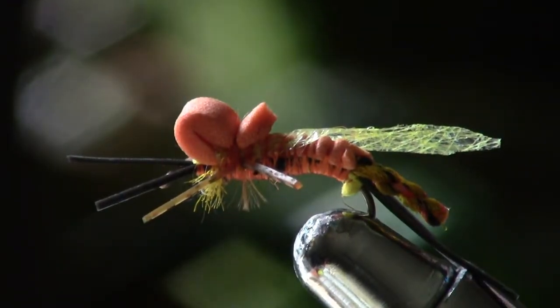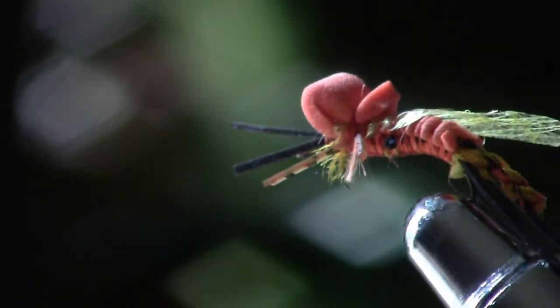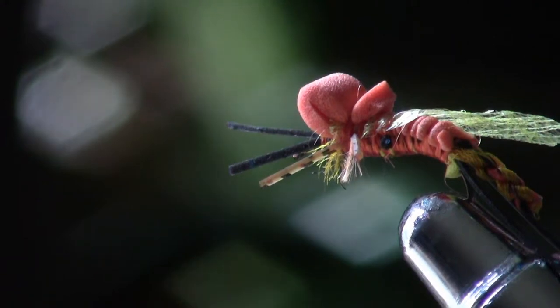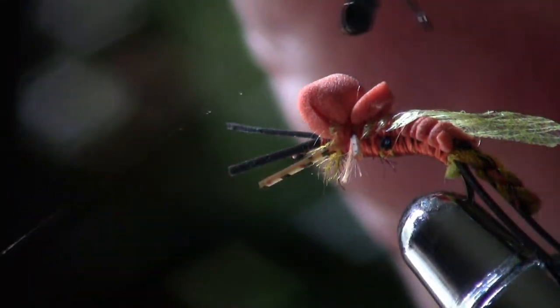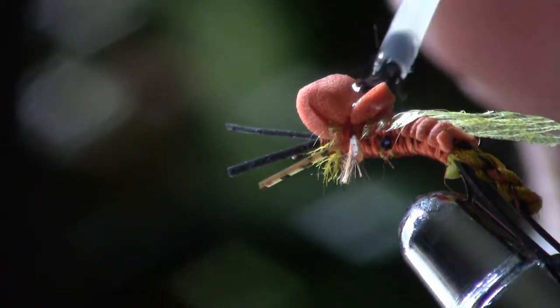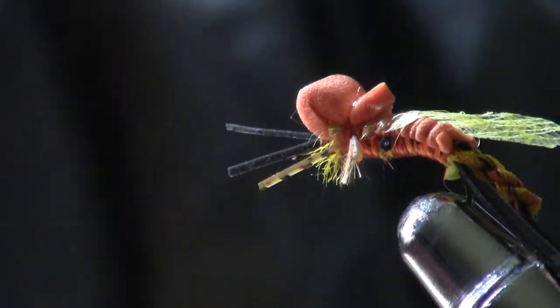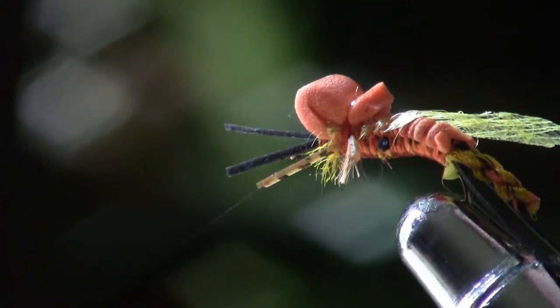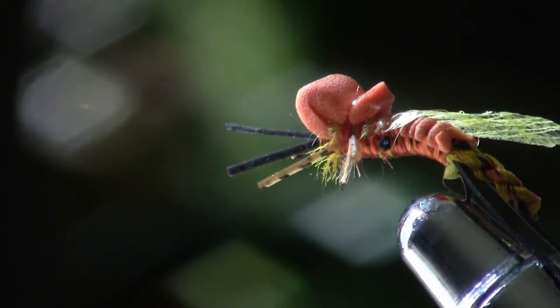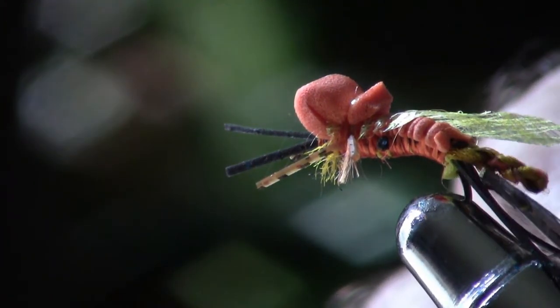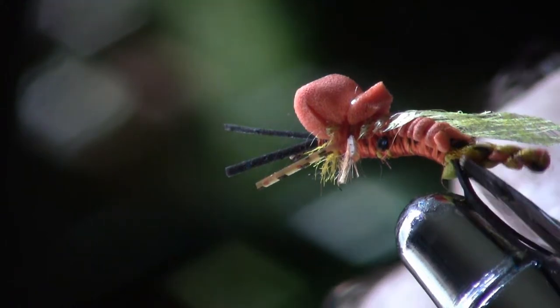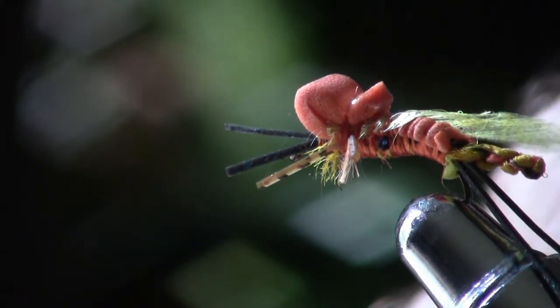And there we have a stonefly. Take a little crazy glue. Once I let that dry, I'm going to treat this furrowed body with Scotch Guard so that it doesn't absorb water so much and want to droop.